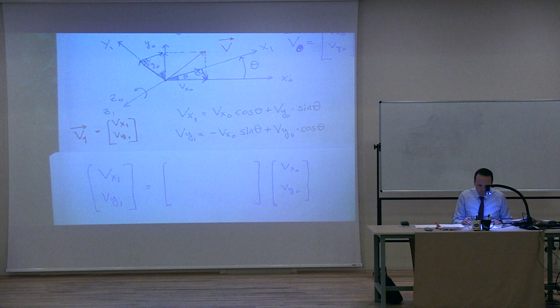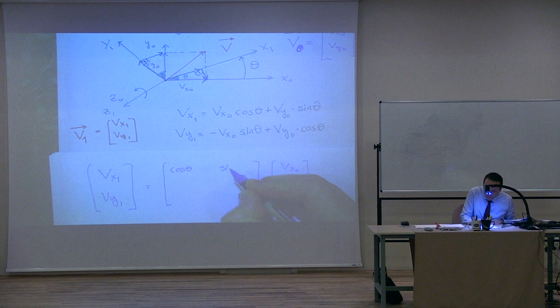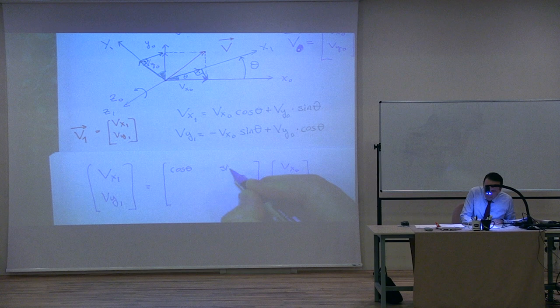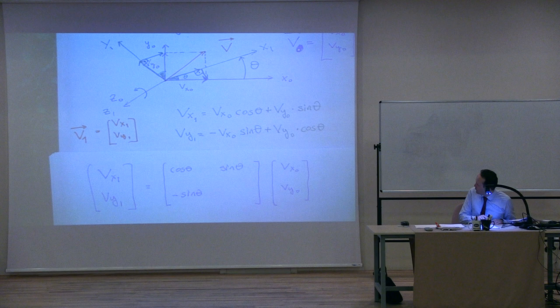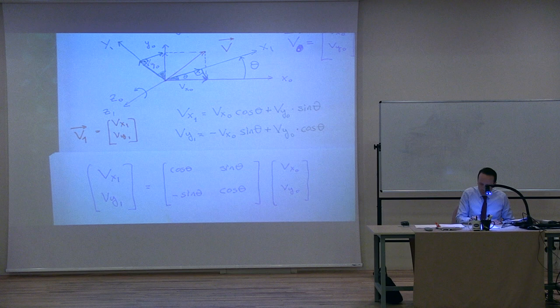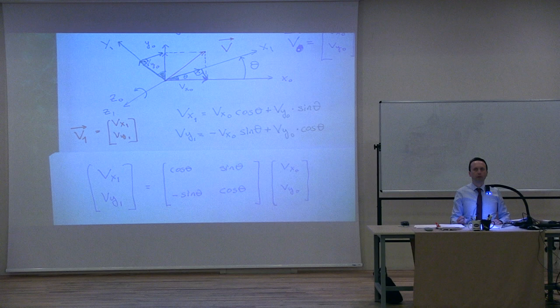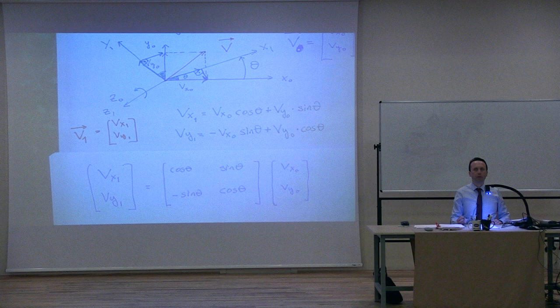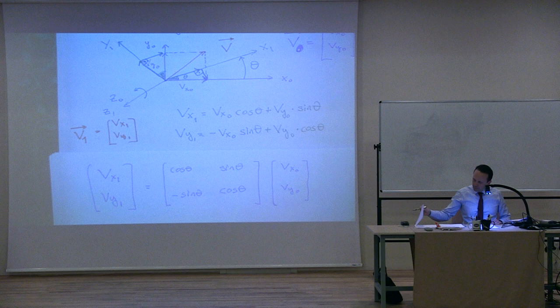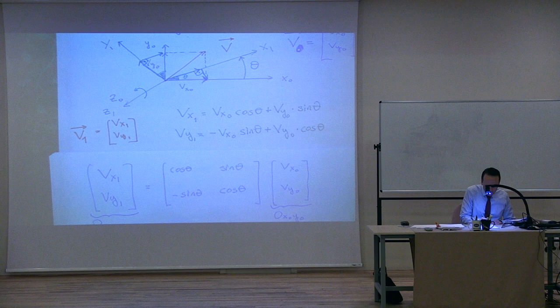We can also rotate around the x-axis by an angle phi. For a positive rotation, take your right hand, put your thumb along x, and that direction is positive. If we rotate around x, the x-component does not change: vx₁ = vx₀. Filling out the rest using the same trigonometric argument, the transformation matrix for rotation around x by angle φ is: [[1, 0, 0], [0, cos φ, sin φ], [0, −sin φ, cos φ]].